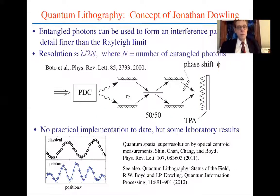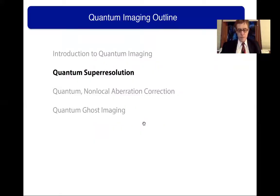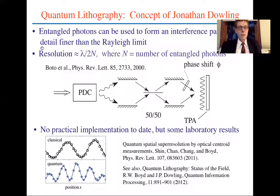Let me give you an example of quantum imaging called quantum lithography. I think it captures a lot of the essence of how quantum imaging works. The idea is that entangled photons can be used to form an interference pattern with detail finer than the Rayleigh limit, and this resolution keeps scaling with the number of entangled photons.